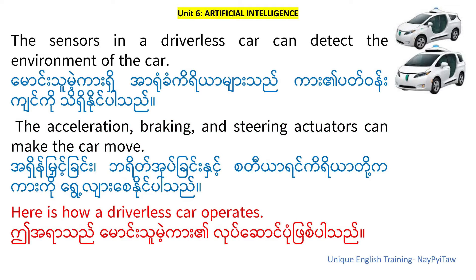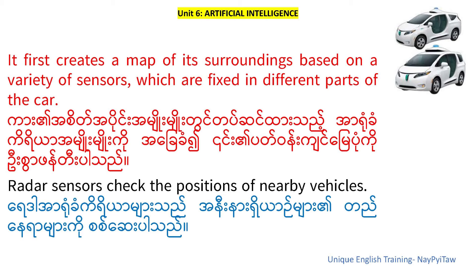Here is how a driverless car operates. It first creates a map of its surroundings based on a variety of sensors, which are fixed in different parts of the car.